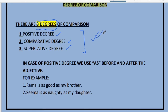In the positive degree, we put 'as' before and after the adjective. For example: 'I am as good as my brother' or 'Rama is as good as my brother.' Here, 'good' is the adjective, and before and after it we use the word 'as.' This identifies it as a positive degree sentence.